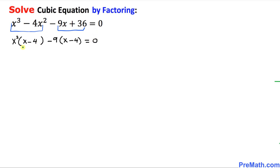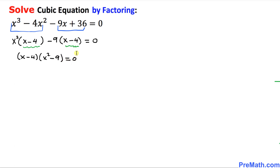Now as you can see these two factors are the same, so we can factor them out once again. So x minus 4 comes outside and we are left with x squared minus 9, which is equal to 0.